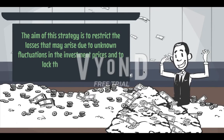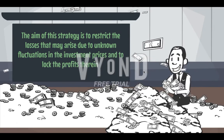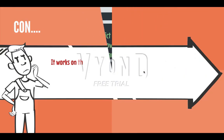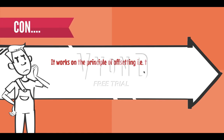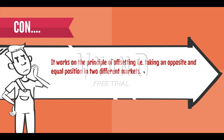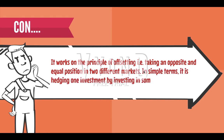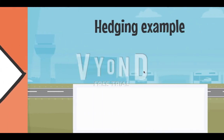Hedging works on the principle of offsetting — that is, taking an opposite and equal position in two different markets. In simple terms, it is hedging one investment by investing in some other investment.